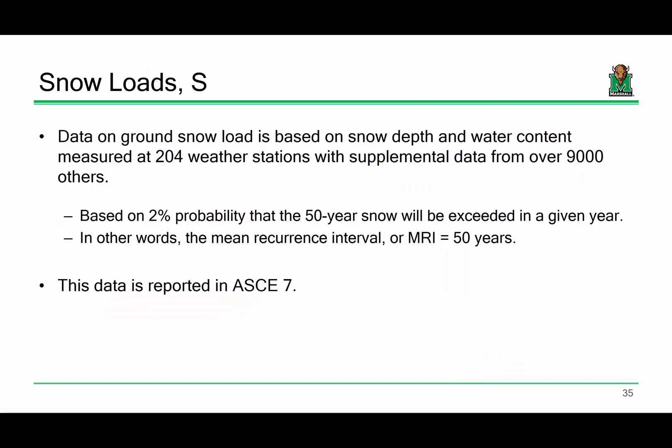Now the third primary gravity load: snow. Snow loads, just like other loads, get updated over time. There's a series of weather stations across the country that collect snow data, and that gets reported in ASCE 7 as appropriate ground snow loads. We design based on the 50-year snow — the 2% probability that the 50-year snow will be exceeded in a given year. The mean recurrence interval used for snow is 50 years.